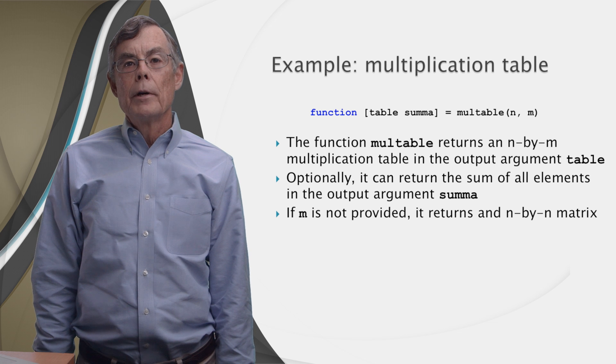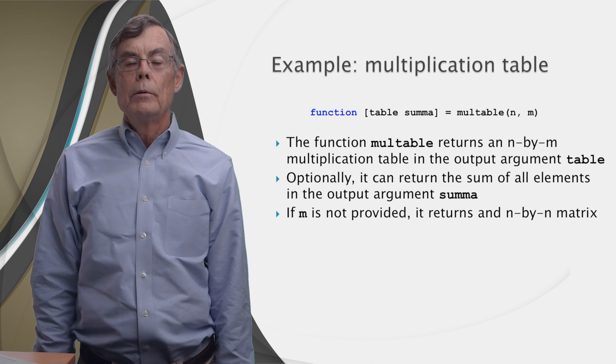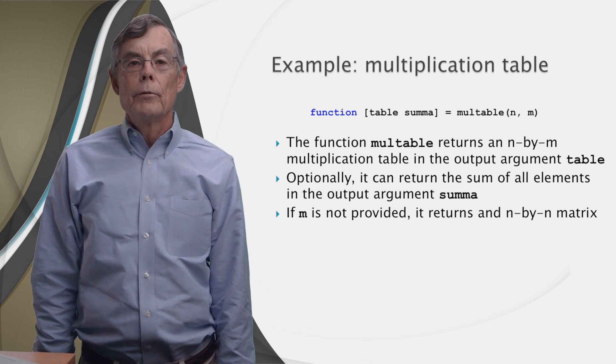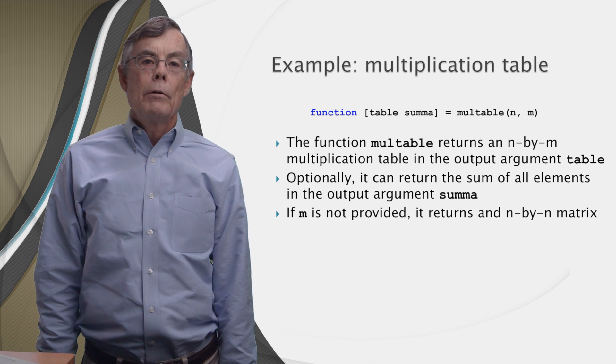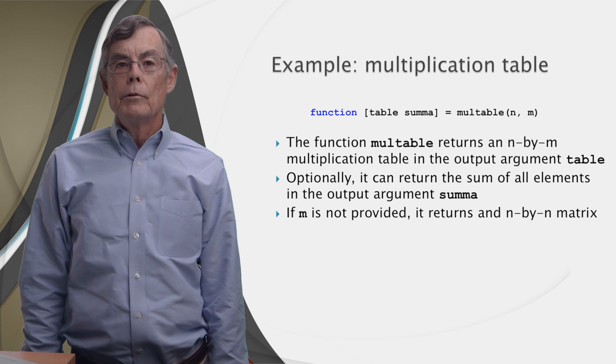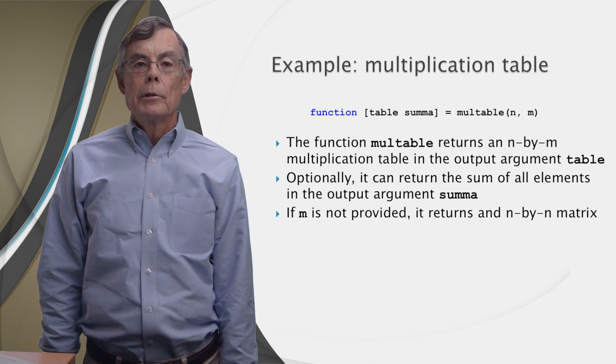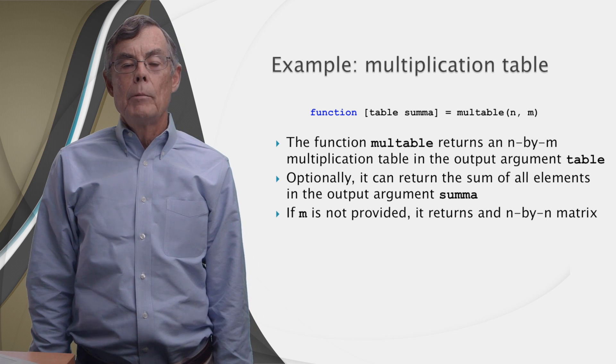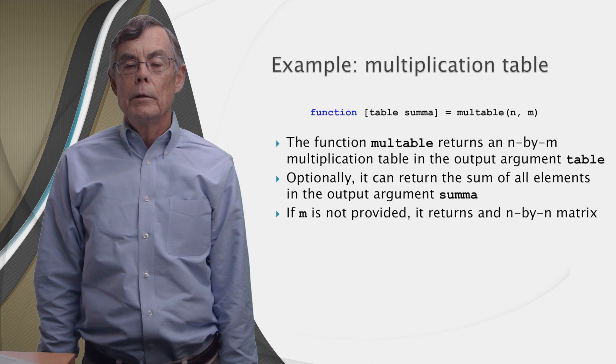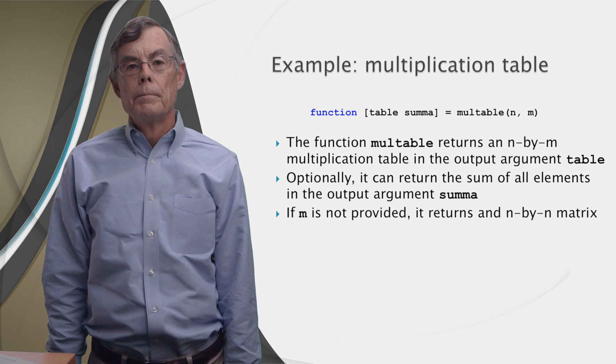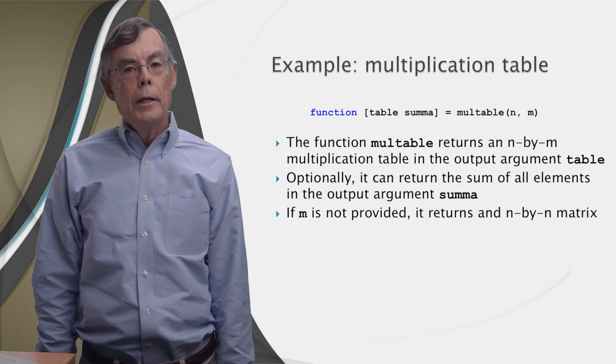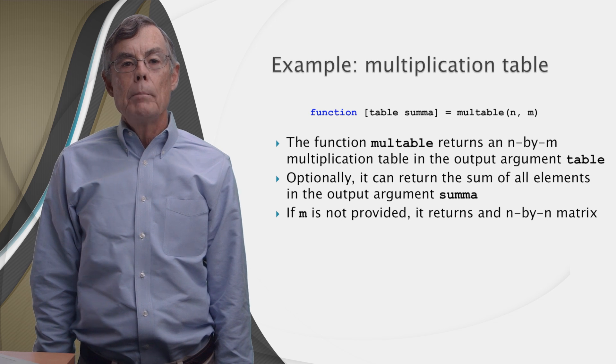Here's the function declaration of a function called multtable, with two output arguments and two input arguments. It returns an n by m multiplication table in the output argument called table. Optionally, it can also return the sum of all elements in the output argument, in the variable summa. If it's called with only one input argument, it returns an n by n matrix.